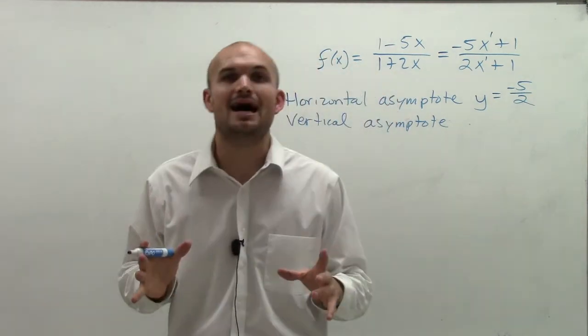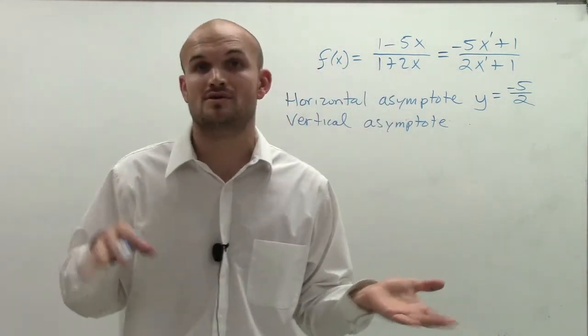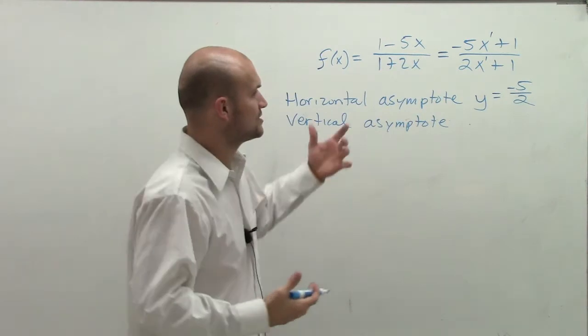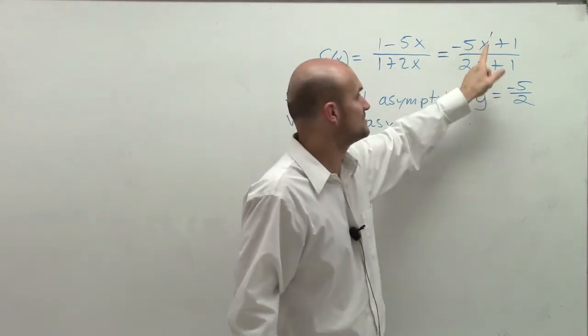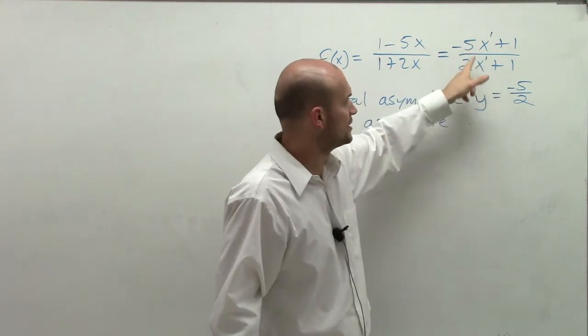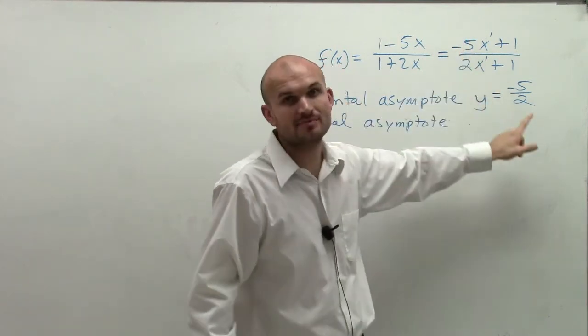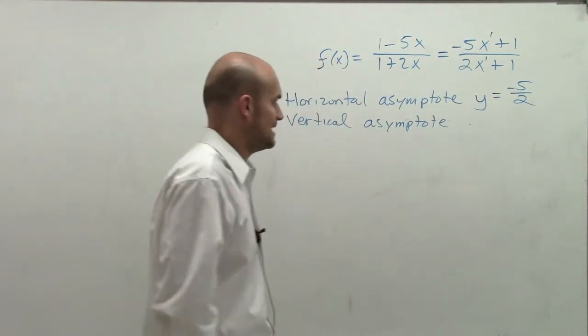So that's going to be the line that our graph approaches horizontally. Again, I'll just remember, I'll just go through it again. When you have the same exponent for your polynomial up top and bottom, then what you do is you look at the coefficients, and that's going to be your line for your horizontal asymptote.